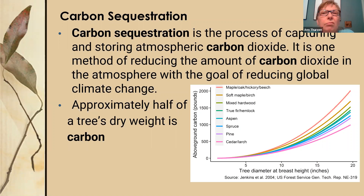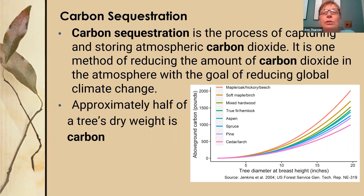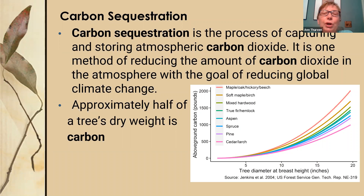The amount of carbon stored in a tree depends on its size, age, and species. A single tree can sequester as many as 10 pounds of carbon each year. Different trees sequester different amounts — maples, oaks, hickories, and beech are the best, while cedars and larch are at the bottom. When you consider that trees can also produce around 260 pounds of oxygen and sequester 10 pounds of carbon dioxide in a year, that's a pretty impressive superpower.